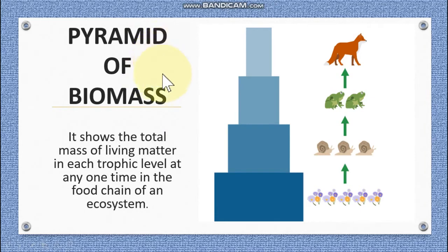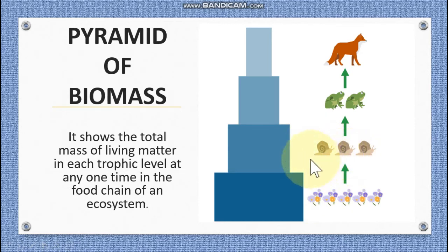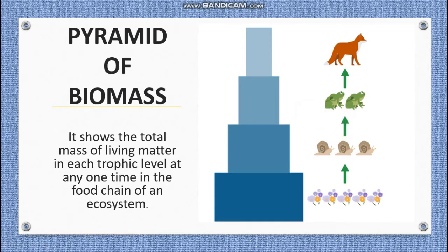Biomass is the total mass of living matter in each trophic level at any one time in the food chain of an ecosystem. The pyramid of biomass also has a regular shape. Plants — the producers — are broader at the base because we measure the dry mass of plants. The primary consumers have less biomass than the plants. Secondary consumers, such as frogs, have less biomass than the primary consumers, such as slugs. Similarly, the biomass of a fox is less than that of the frogs. So again, it is a regular pyramid shape.